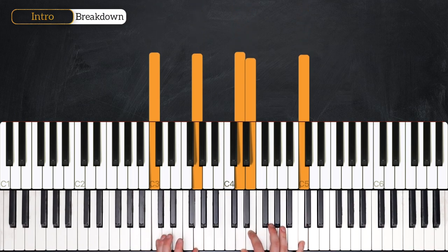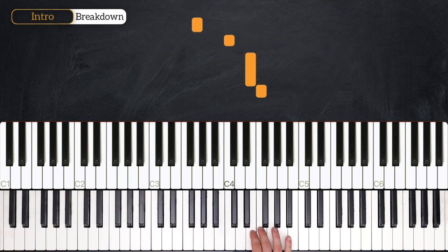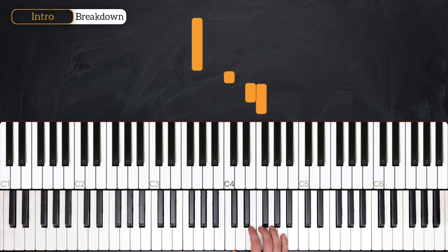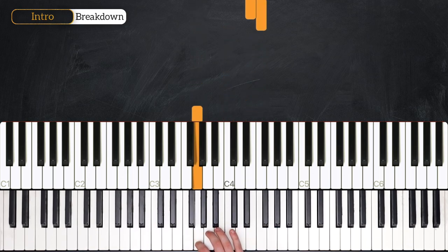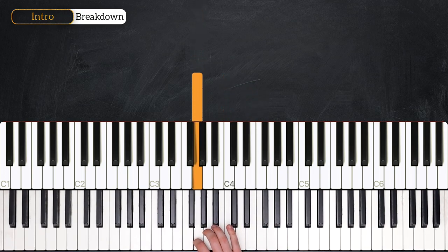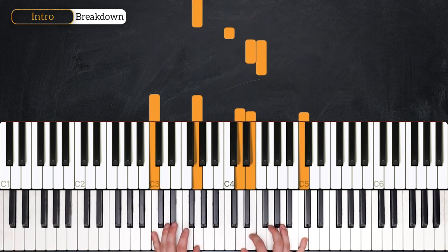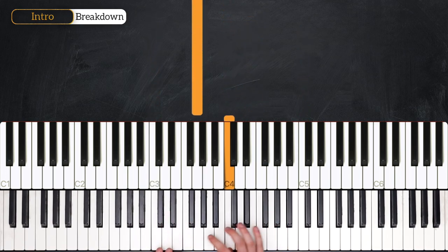And then in this last bar, we have... F, E, C, G. And we sort of play the F, E together and the C, G together. So it sounds like... 1, 2, and 3, and 4. So those two bars together. 1, 2, 3, 4. 1, 2, and 3, and 4.